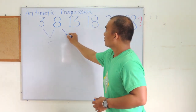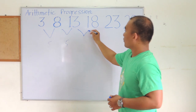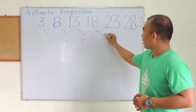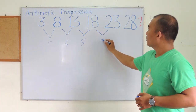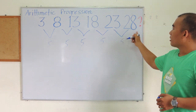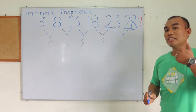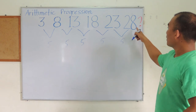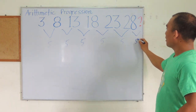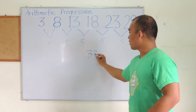8 to 13 is also 5. Same with 13 to 18, that's also plus 5. So 18 plus 5 is 23, and 23 plus 5 gives us 28. Therefore, to determine the final answer, 28 plus 5 equals 33.